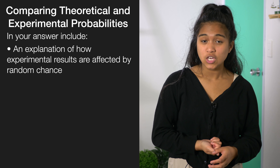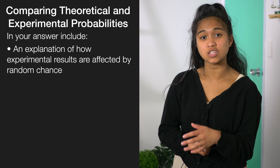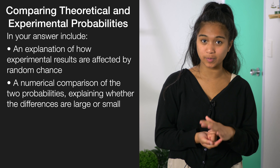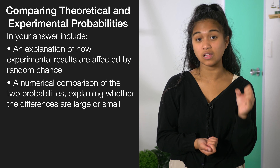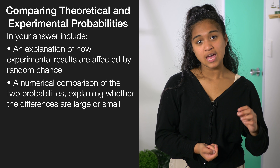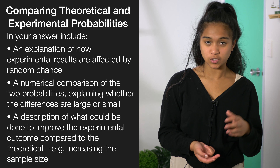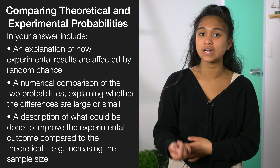A classic question will compare theoretical and experimental probabilities. These questions normally ask you to explain why experimental data doesn't come out exactly as expected. Your answer should include: a statement that experimental results are affected by random chance; a numerical comparison between the two probabilities explaining whether the difference is large or small; and a description of what could be done to better match the theoretical model, such as increasing the sample size or running a simulation.